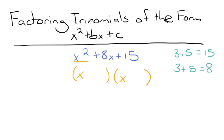So our two numbers will be 3 and 5. So we're going to write 3 in one set of parentheses and 5 in the other. And since we have plus signs in both places, we're going to write plus 3 and plus 5.